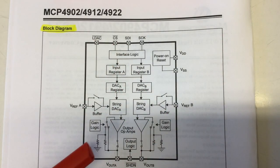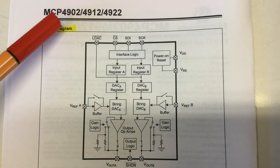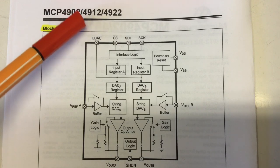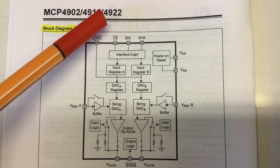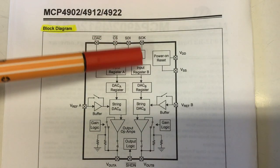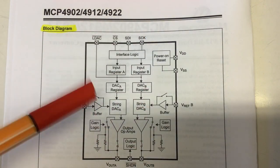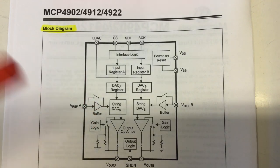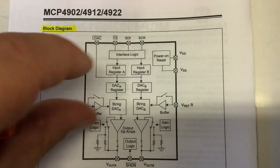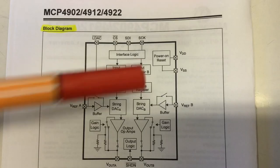And of course, all these switches here - gain, bypass the buffer, output - are also controlled by the interface logic. Oh, and I forgot to mention for the MCP4901, 4911, and 4921, there's simply that whole channel B stuff missing from the chip. And I think they also come in a smaller package with less pins.